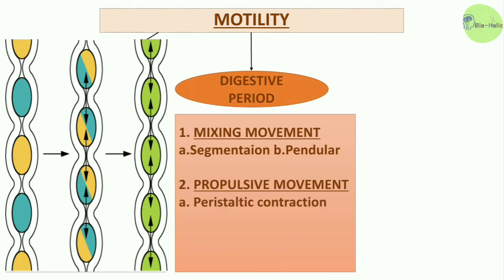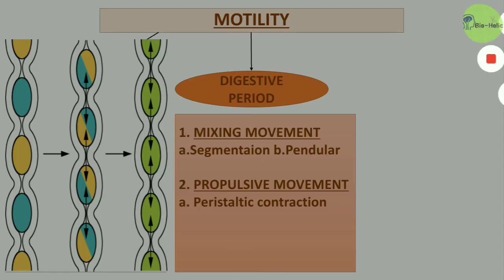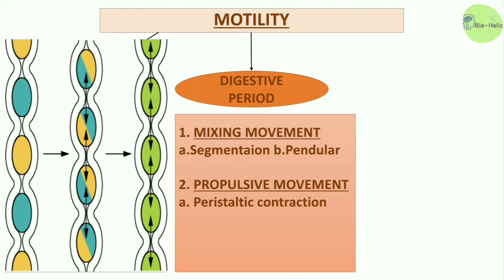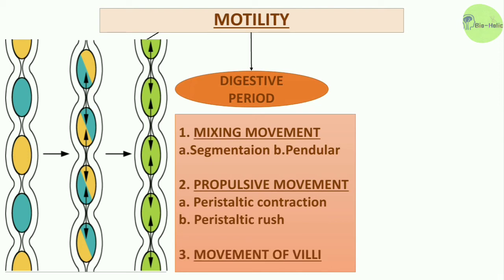Propulsive movements are peristaltic contractions — a wave of contraction preceded by a wave of relaxation that propels intestinal contents aborally, aiding digestion and absorption. This rhythmic contraction is controlled by the enteric nervous plexus, with acetylcholine, nitric oxide, and VIP also playing roles. The peristaltic rush is a very powerful peristaltic contraction occurring when the intestinal mucosa is intensely irritated, as in infectious processes. Movement of villi also occurs, helping empty lymph from the central lacteal into the lymphatic system.